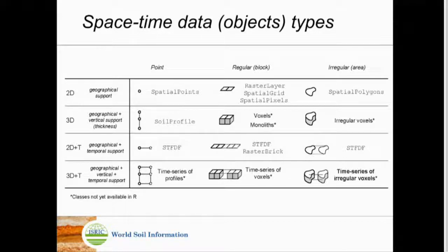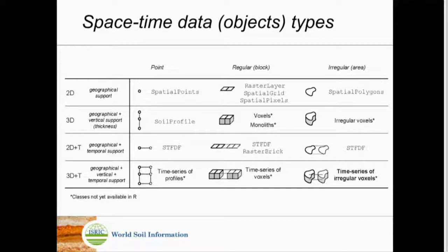Correct — that's the only generic class. Everything can be put in that format, and by reducing complexity you get down to all other classes. First you take time out, then you have 3D irregular voxels or prisms. If you introduce regularity, you get voxels. Remove depth, you get pixels. Take out the support and you have points.